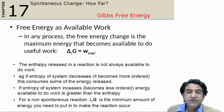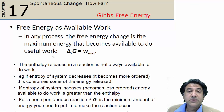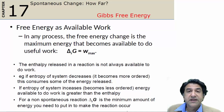It turns out that delta G for a reaction is a very, very important quantity. Delta G actually tells you the maximum amount of work that you can get out of a system. Delta G has units of energy, so delta G is the maximum amount of work that you can get out of that chemical reaction.